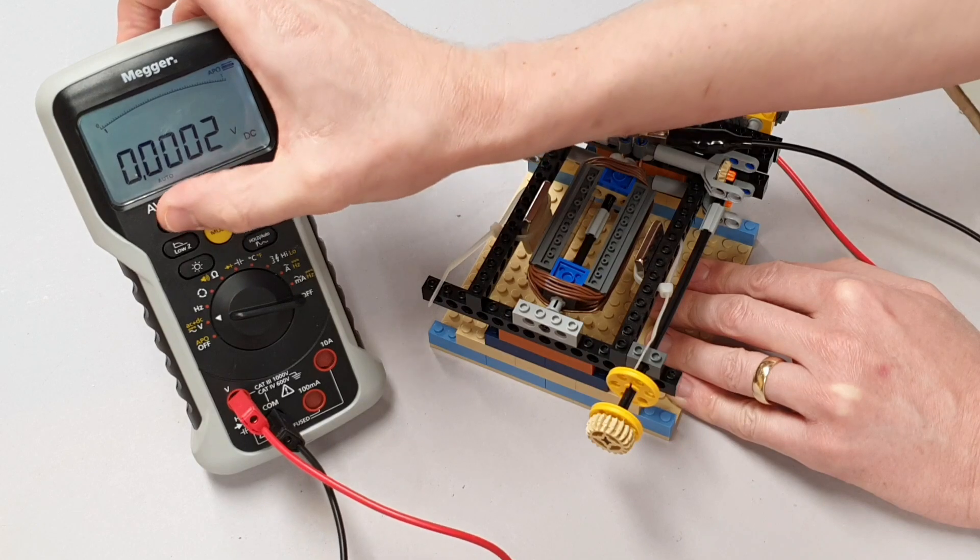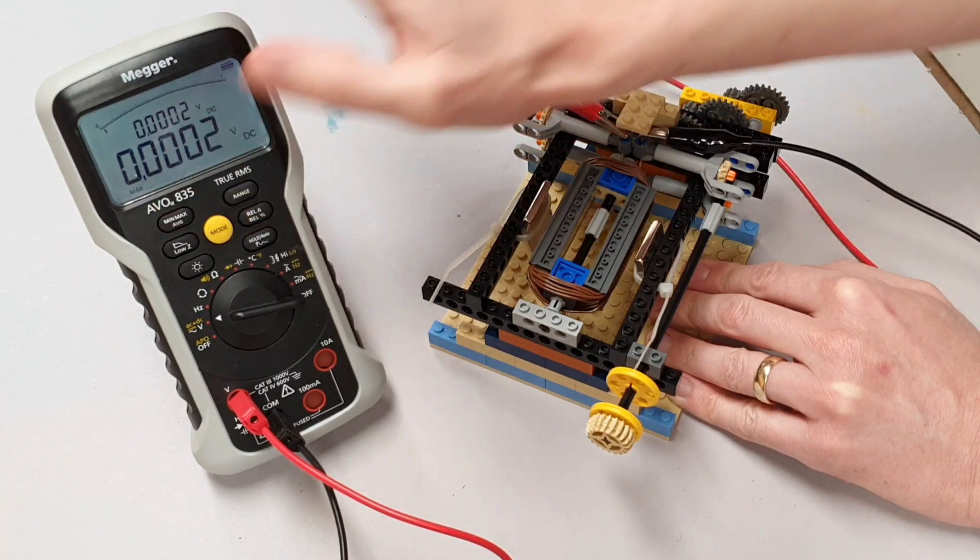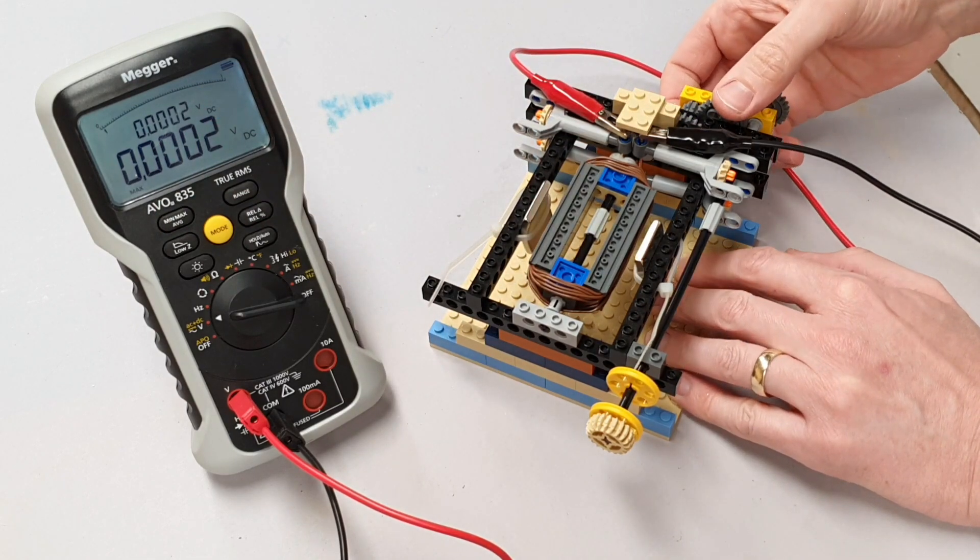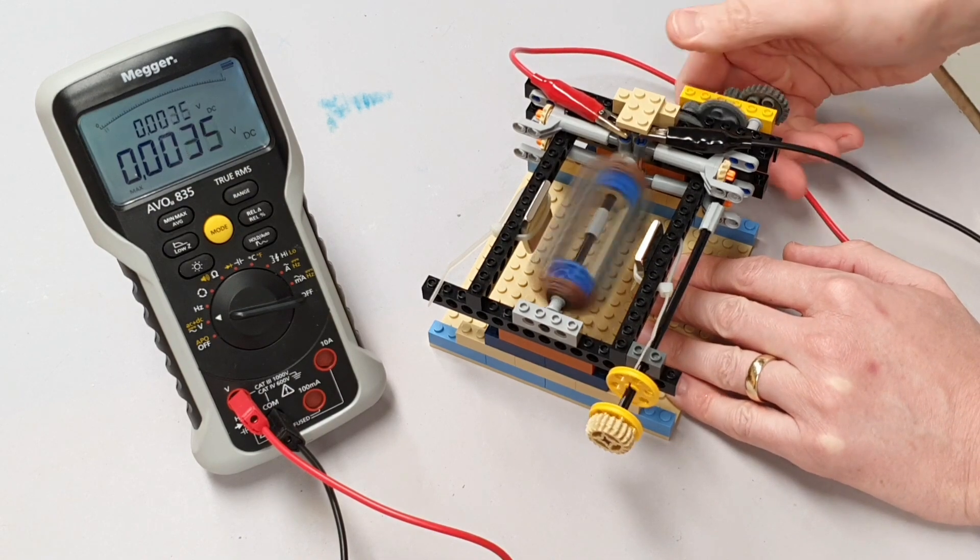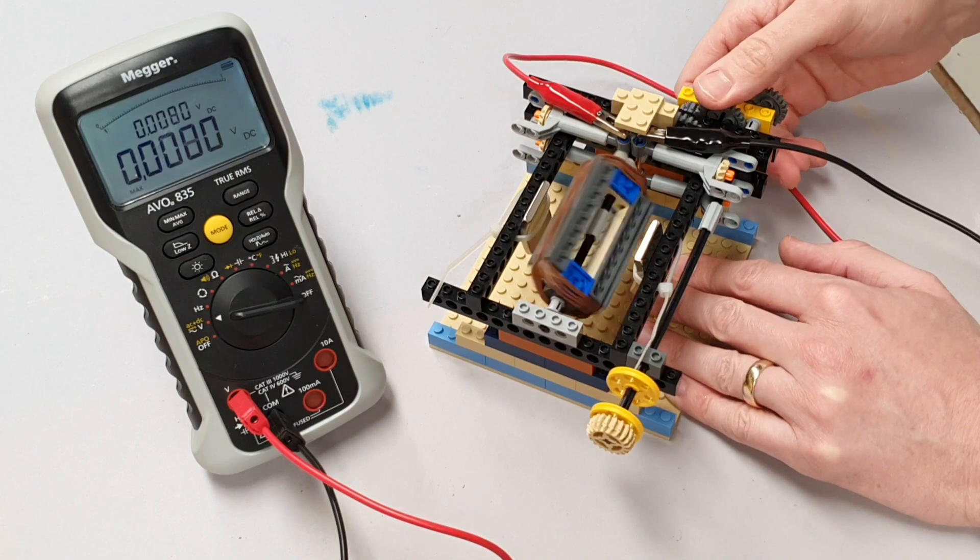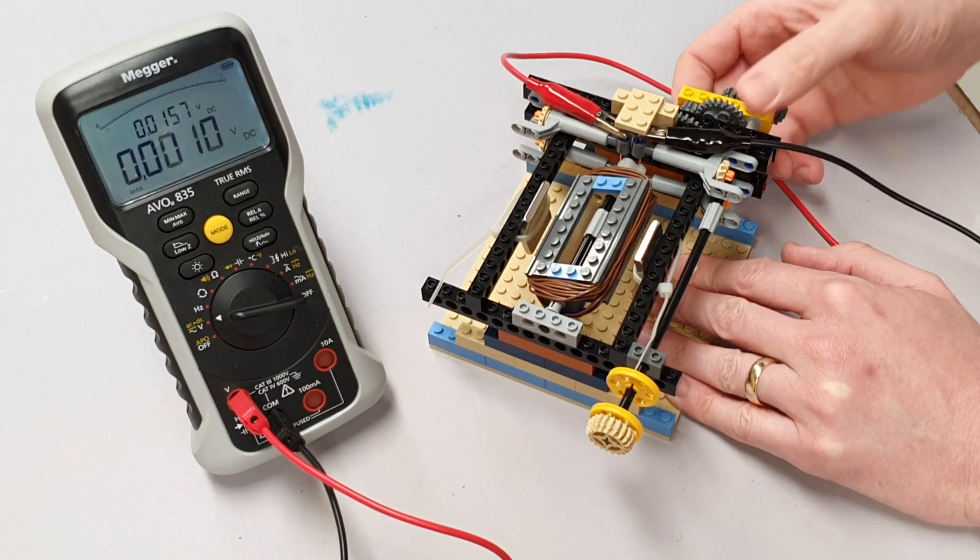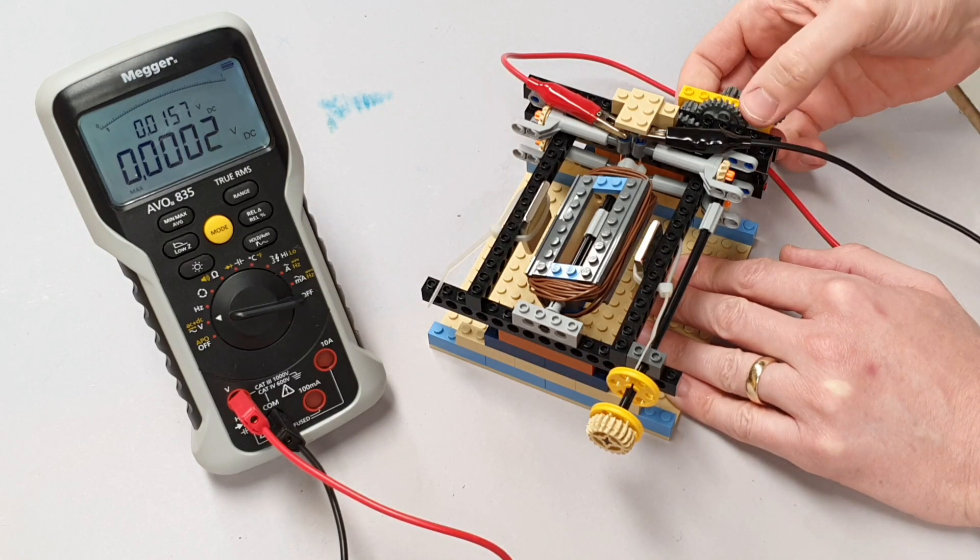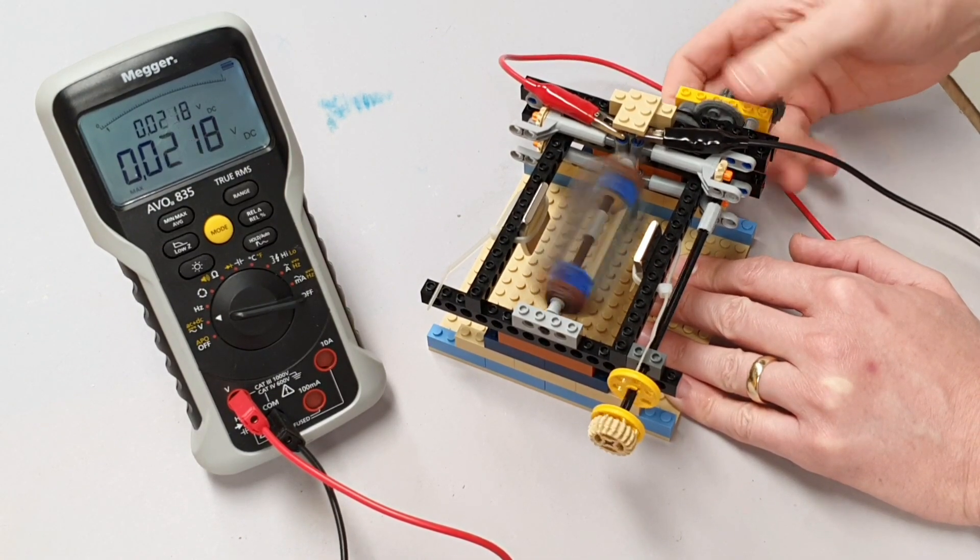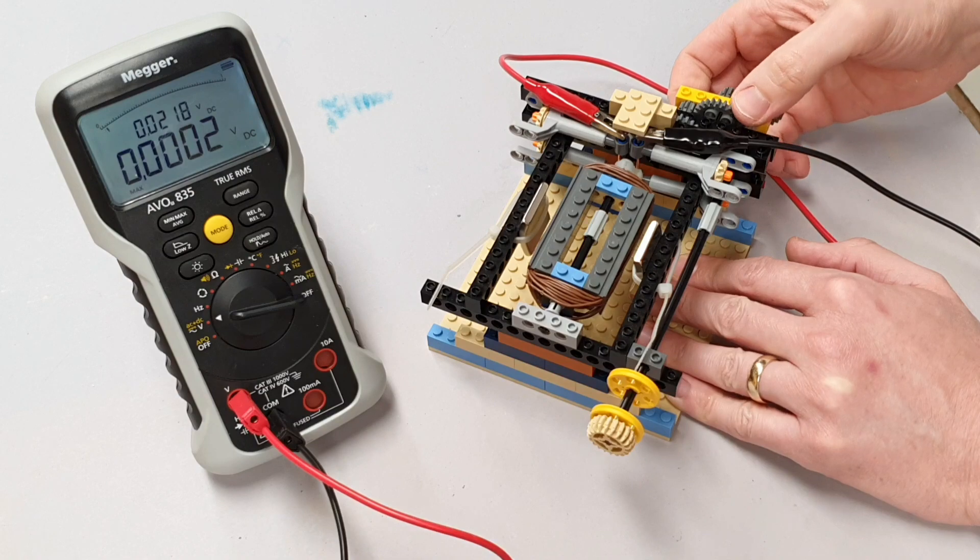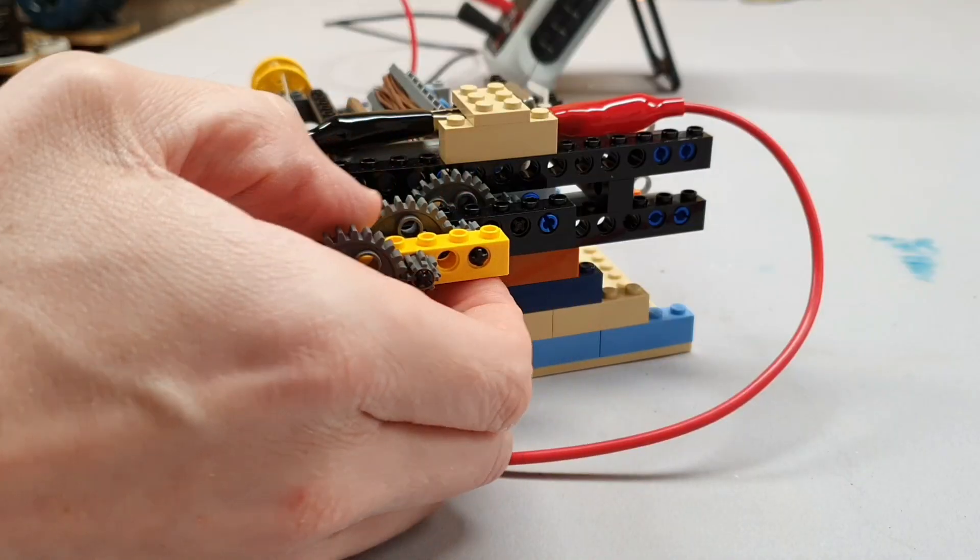Let's just set this so that it measures the maximum value produced. So we'll set that. So now it will record up here, the maximum value that we produce in any given time period. So we'll give this a quick rotation and see what happens. There we go. 35 volts that got up to. Not 35 volts. There we go. So that's now up to 0.0157. So almost 16 millivolts. Again, struggling to... There we go. Look at that. Up to 22 millivolts nearly. And I think that's probably the best we're going to get out of it today.